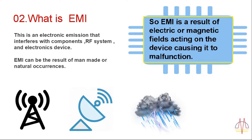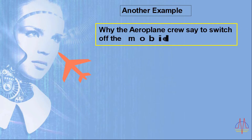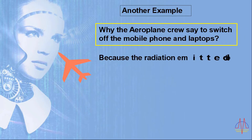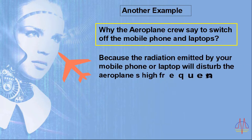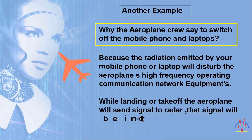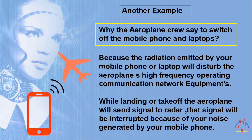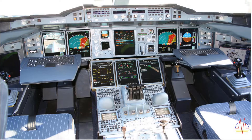Another example of EMI: this is why airplane crew asks you to switch off mobile phones and laptops. The radiation emitted by your mobile phone or laptop will disturb the airplane's high-frequency network equipment. While landing or takeoff, the airplane sends signals to radar, and those signals can be interrupted by the noise generated by your mobile phone. The interior of the airplane contains numerous high-frequency electronic equipment and network systems.